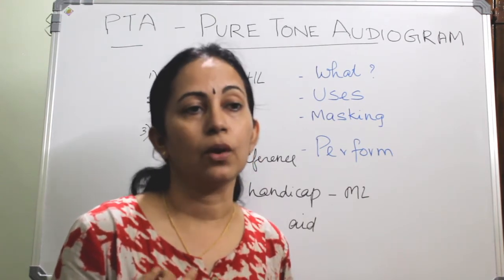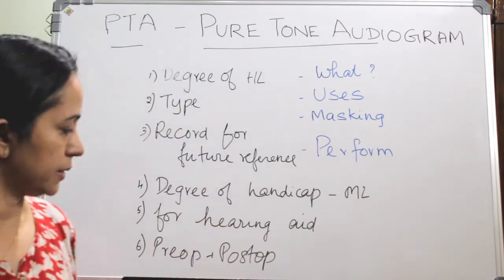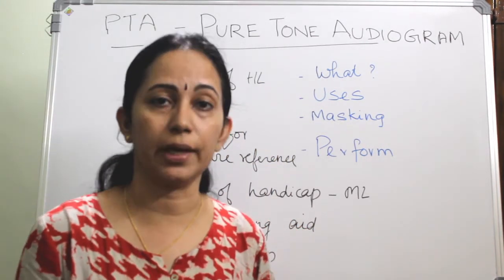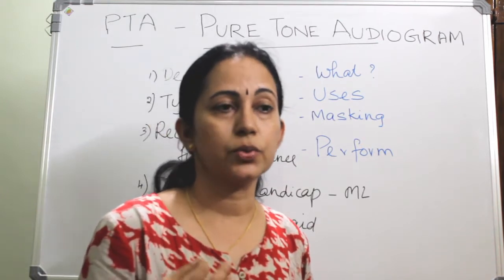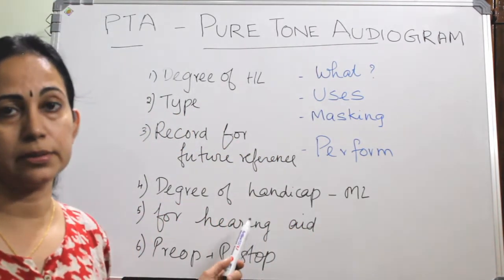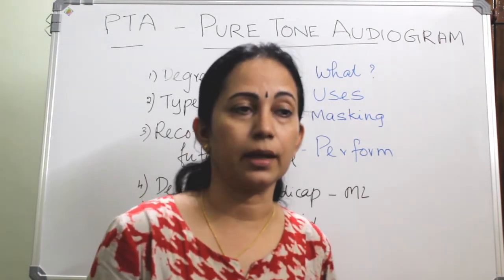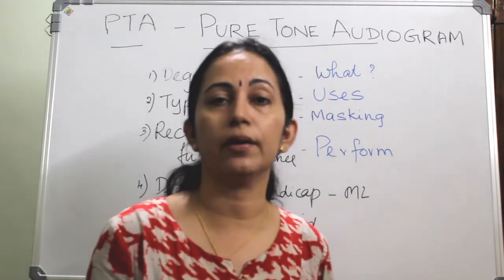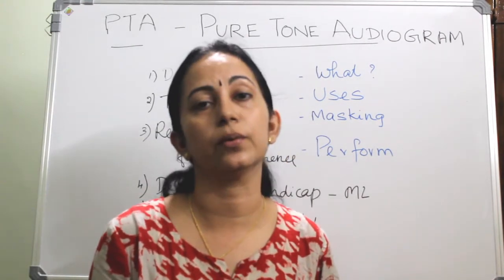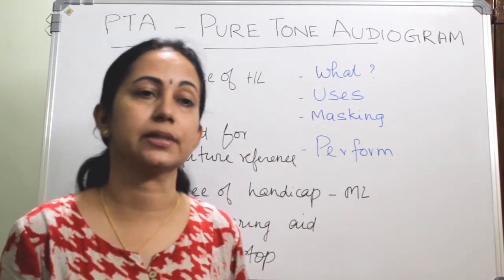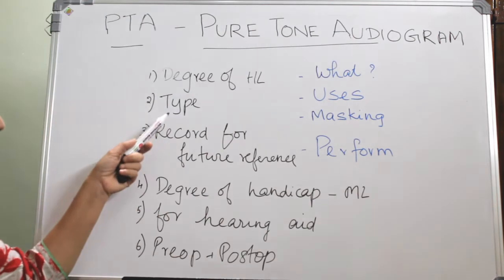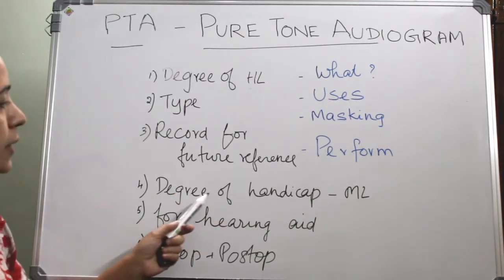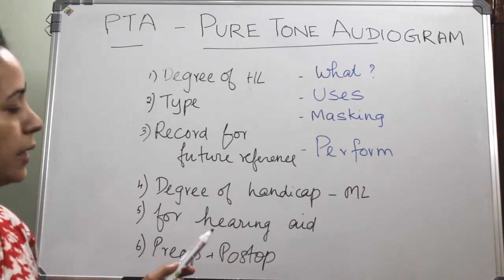Especially in cases of tympanoplasty or myringoplasty and similar conditions. In medico-legal conditions, you need to determine the degree of handicap for compensation purposes. Each country has its own calculation statement for assessment of the degree of handicap. For hearing aid prescription, only after knowing the type and degree of hearing loss can you prescribe the hearing aid, so this is essential before prescribing one.